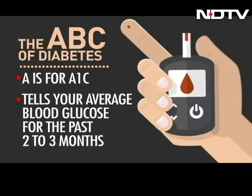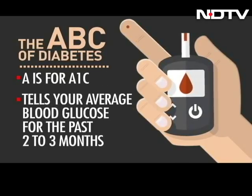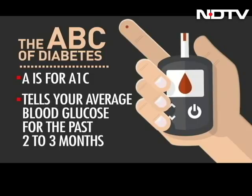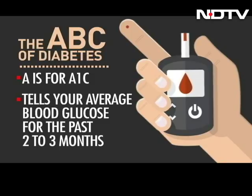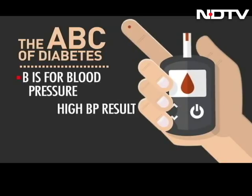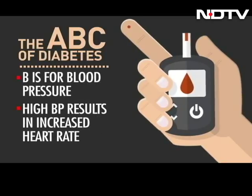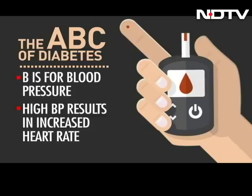A is for A1C. Your A1C check, which also may be reported as estimated average glucose, tells you your average blood glucose for the past 2 to 3 months. B is for blood pressure. High blood pressure makes your heart work harder than it should.